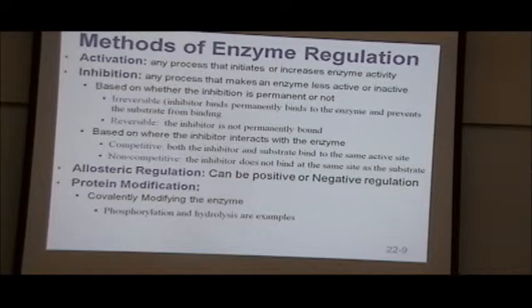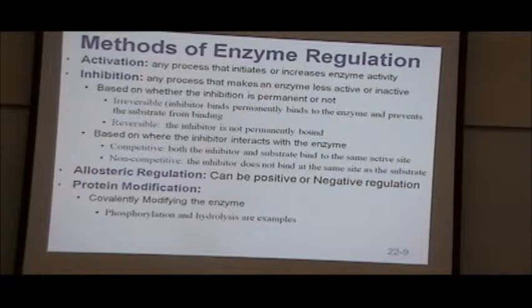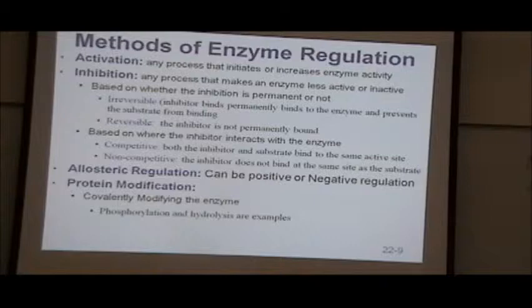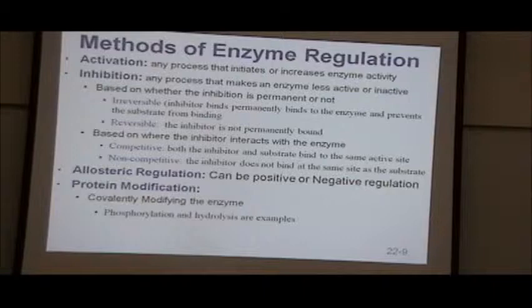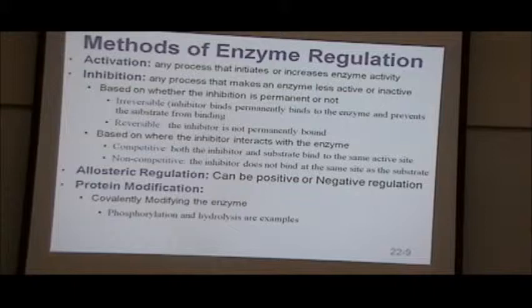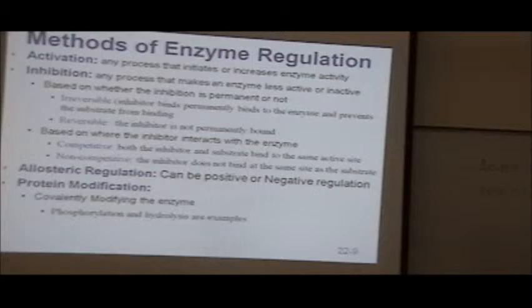Earlier in the chapter we noted that an enzyme-catalyzed reaction can go 10 to the power of 20 times faster, meaning most biological reactions won't happen without an enzyme present. This is critical for metabolism — more than half of what happens metabolically has to do with how we regulate our enzymes. The entire second half is about regulation.